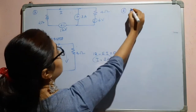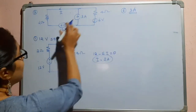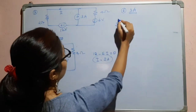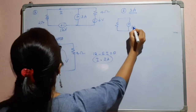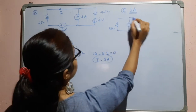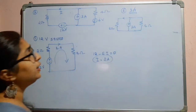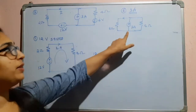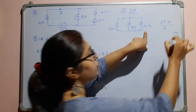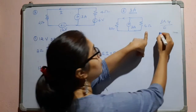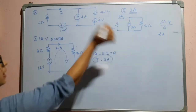Next, let us consider the 3 ampere current source. For that, both voltage sources have to be shorted. We have 2 ohms and 4 ohms. The current through the 2 ohm resistor is 3 multiplied by 4, divided by 2 plus 4, which gives 2 amperes once again, flowing in this direction.